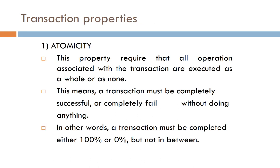Let's discuss each of the four properties in detail. The first is Atomicity. This property requires that all operations associated with a transaction are executed as a whole or not at all. The transaction must be completely successful or completely failed — it must be completed either 100% or 0%, but not in between.